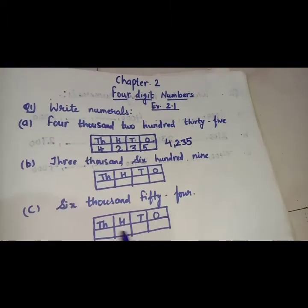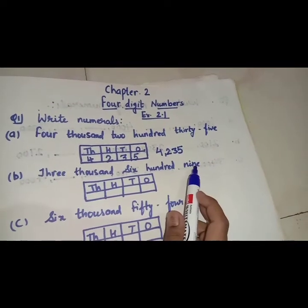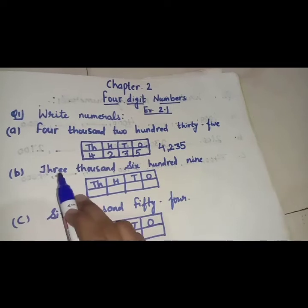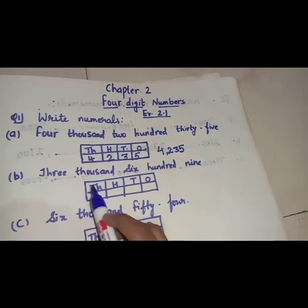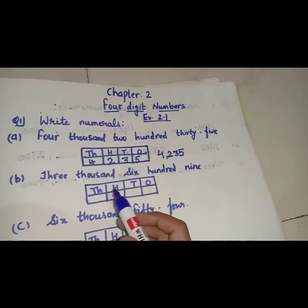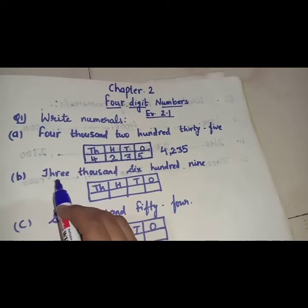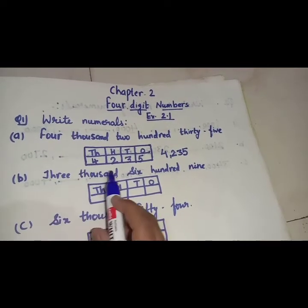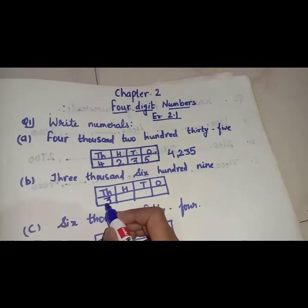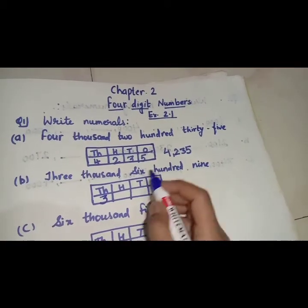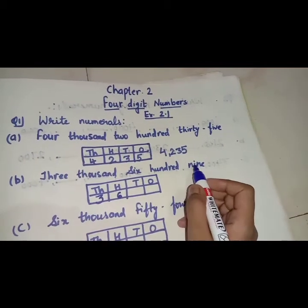Now let's try another question. Question B: 3,609. Again we will write 3,609. So again we will make the place value chart here — ones, tens, hundreds, and thousands. Then again we will place the value. So 3,000 means 3 is at the thousands place. Then 6, so we will write 6 here.